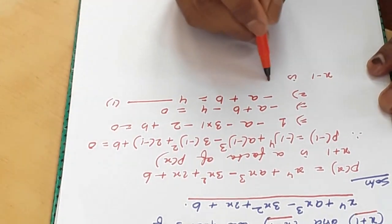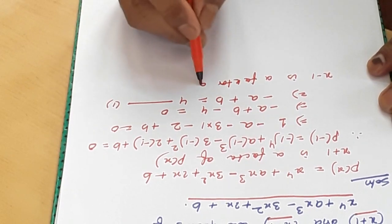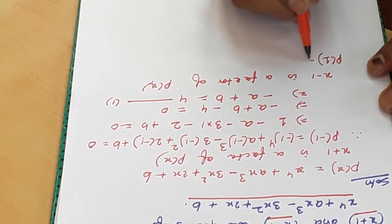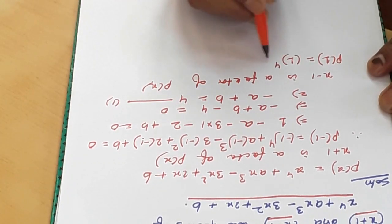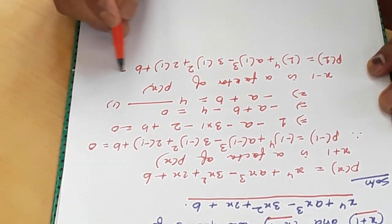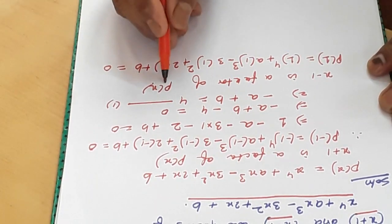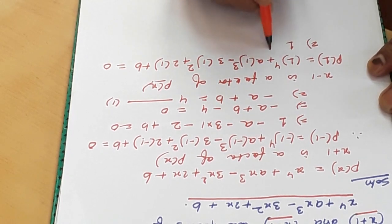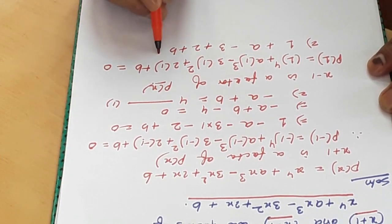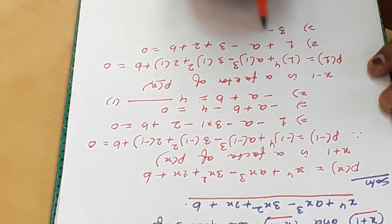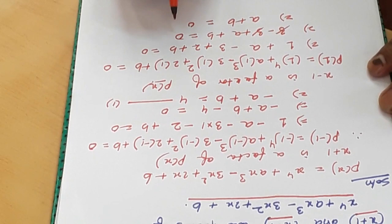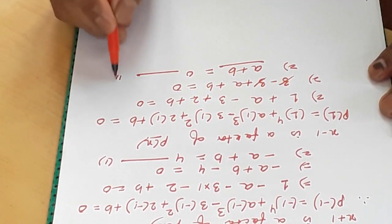Now, x minus 1 is also a factor of P(x). We put 1 in place of x, that is P(1): 1⁴ plus a(1³) minus 3(1²) plus 2(1) plus b equals 0, since x minus 1 is a factor. Solving: 1 plus a minus 3 plus 2 plus b equals 0. We have 1 plus 2 equals 3, so minus 3 plus a plus b equals 0. Therefore, a plus b equals 0. This is Equation 2. We now have two equations.